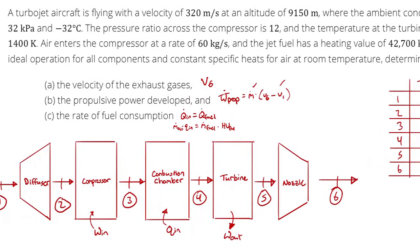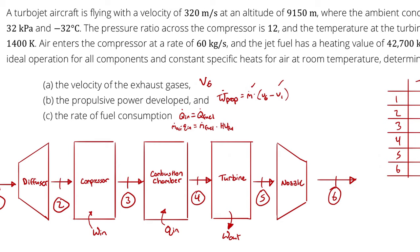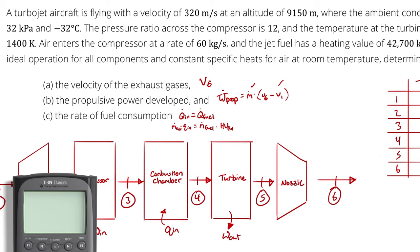First, the temperature at state 1 is negative 32 degrees Celsius. Converting to Kelvin: negative 32 plus 273.15 gives 241.15 Kelvin.